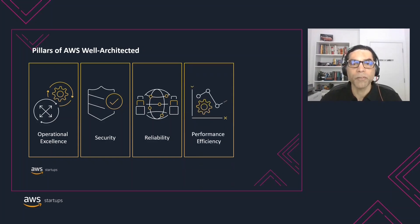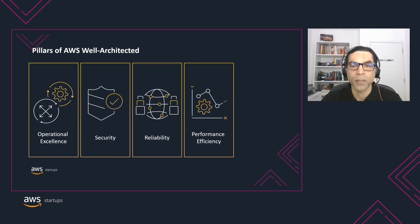The Performance Efficiency Pillar focuses on using IT and computing resources efficiently. Key topics include selecting the right resource types and sizes based on workload requirements, monitoring performance, and making informed decisions to maintain efficiency as business needs evolve.